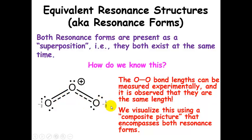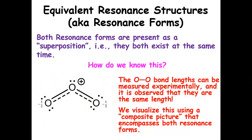That's showing those delocalized electrons. Also notice that we have now split up that formal charge, so now we have partial formal charges as well. We're going to talk about this partial bond order and the partial formal charges later on. How do we know that this superposition is correct — that both structures contribute to the real bonding picture? It's because those oxygen-oxygen bond lengths are measured experimentally and observed to be the same length. This composite picture gives us a way to visualize both resonance forms at the same time.